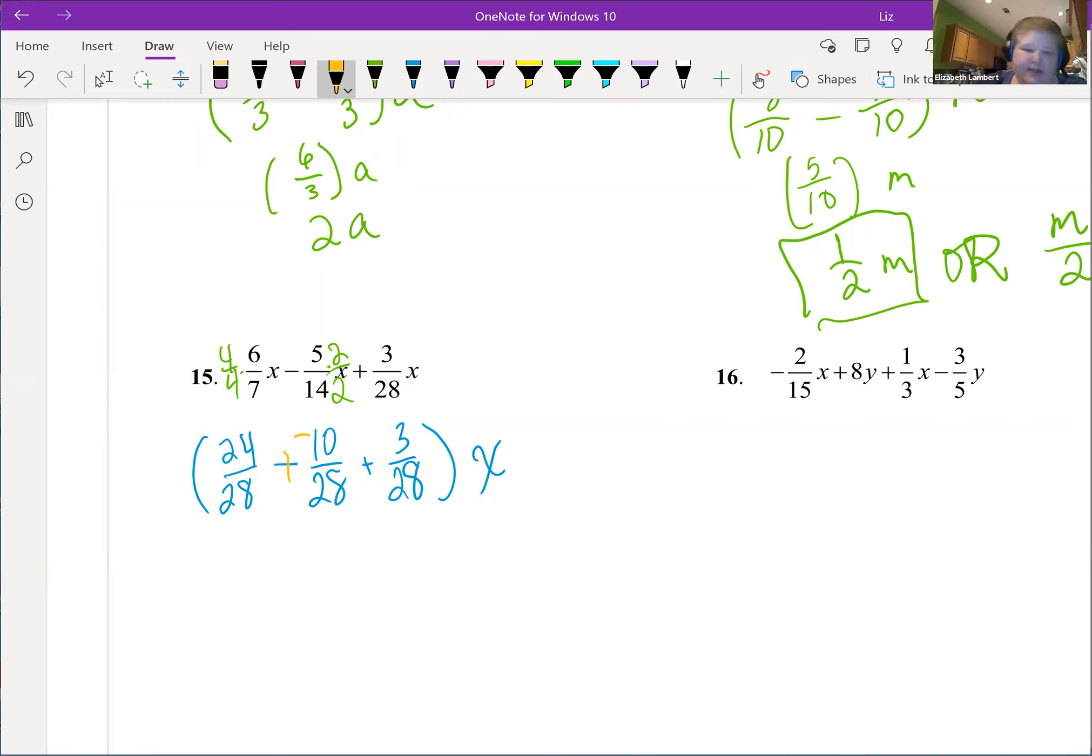Either way works, I just for some people this kind of like ah, it's a little easier to think about now. So 24 things plus negative 10 things is 14 things, then 14 things plus three more things is 17 things. Things being 28ths with the x.